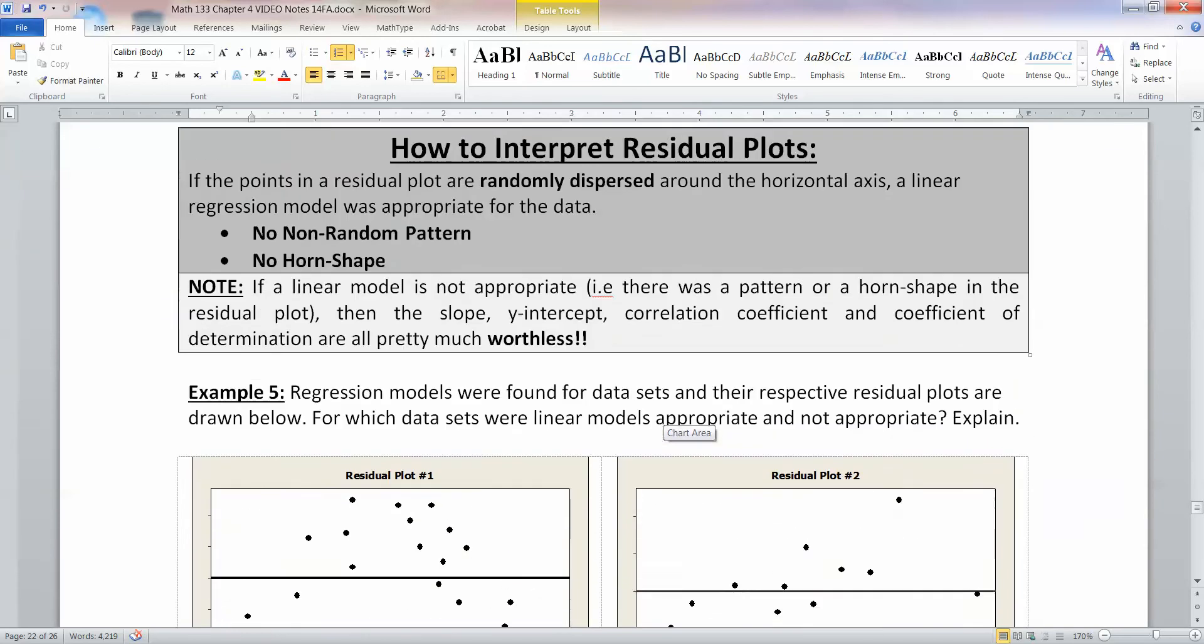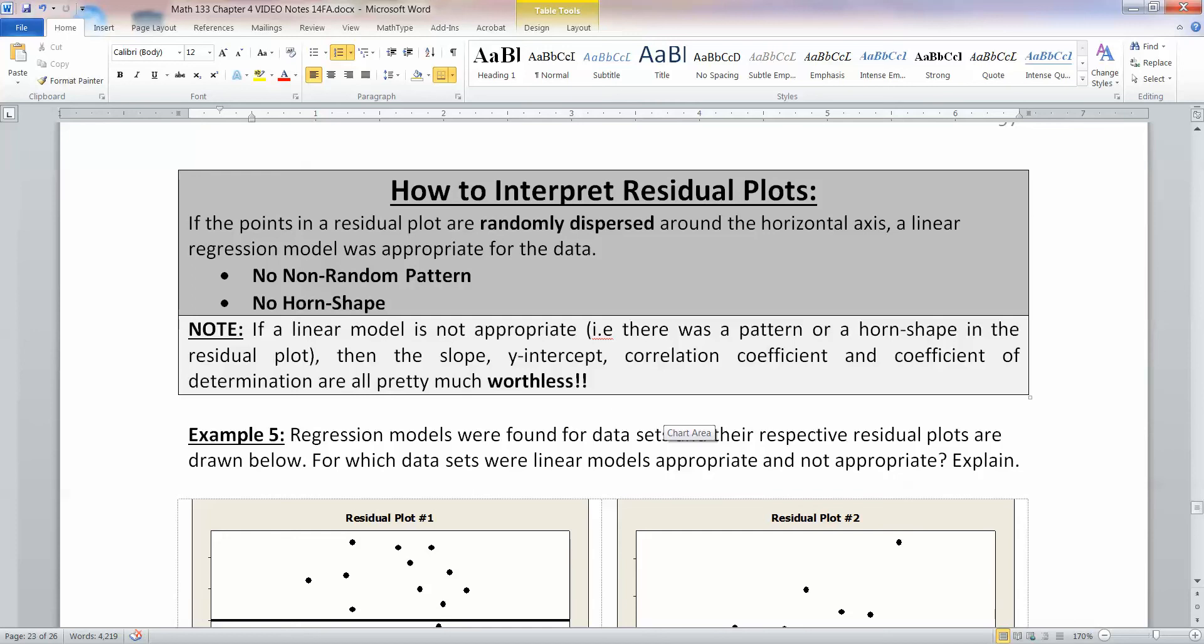Now, how do we look at a graph like this? Since we're not going to be making these by hand, what are we looking for? If the points in that residual plot are randomly dispersed around the horizontal axis, then a linear regression model was appropriate for the data set. In other words, you want no non-random pattern. You want a random pattern.